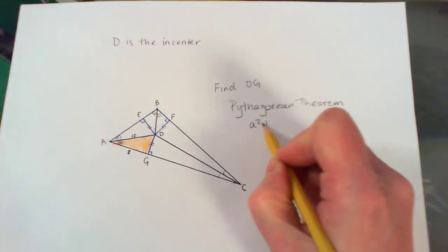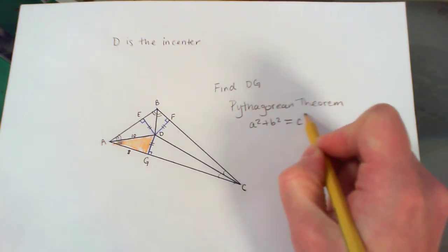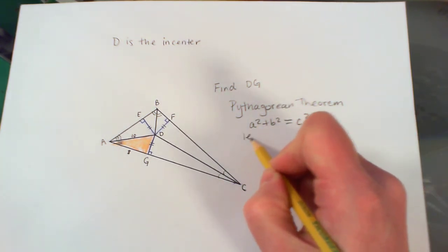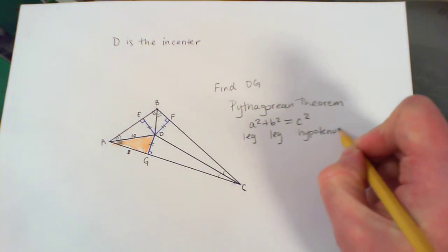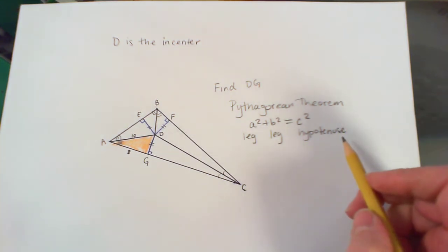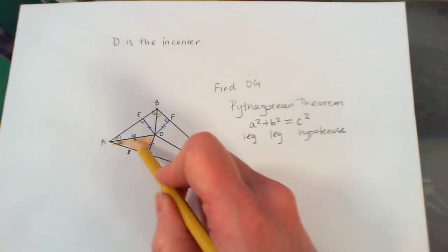which is A squared plus B squared equals C squared. A is going to be a leg of a right triangle, B is going to be a leg of a right triangle, and C is the hypotenuse, it's always the hypotenuse. And the hypotenuse is the longest side of a right triangle, and it's across from the right angle.